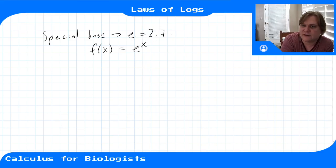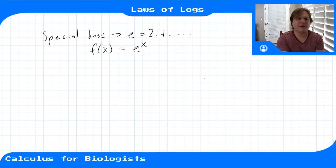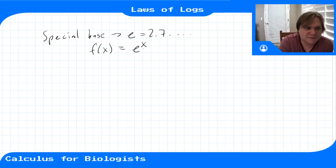Where e is 2.7 and a bunch of stuff, some irrational number that we'll get into why it's special later, but right now it's special because this is a very common function in all areas of science.